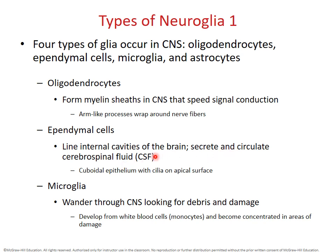Cerebrospinal fluid carries oxygen and nutrients with it, becoming a surrogate for blood and helping to nourish tissues exposed to it. Cerebrospinal fluid is not a static fluid — it's produced and ultimately drains away into the bloodstream as well. The cilia on the surface of the ependymal cells create a flow of cerebrospinal fluid so that it can move from its origin to its ultimate drainage point and keep from becoming static.